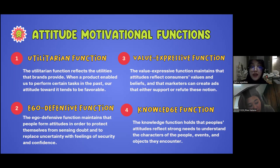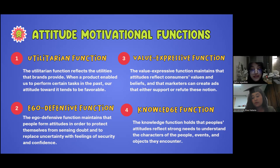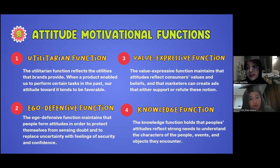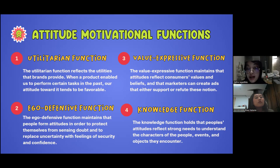Next is attitude motivational functions. The utilitarian function reflects the utilities that a brand provides — when a product enables us to perform certain tasks, our attitude toward it tends to be favorable. The ego-defensive function maintains that people form attitudes to protect themselves from self-doubt and to replace uncertainty with feelings of security and confidence. The value-expressive function maintains that attitudes reflect consumers' values and beliefs, and marketers can create ads that support or refute this notion. The knowledge function holds that people's attitudes reflect a strong need to understand the character of the people, events, and objects they encounter.